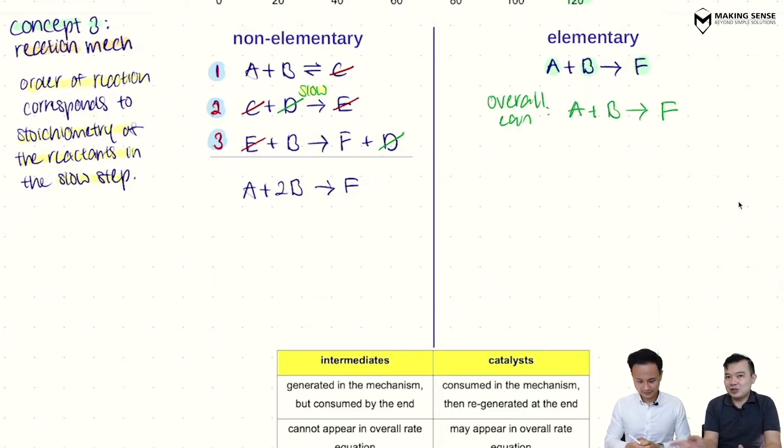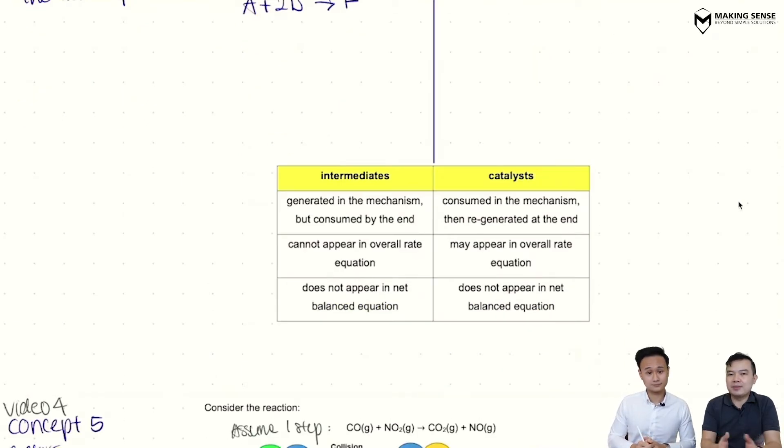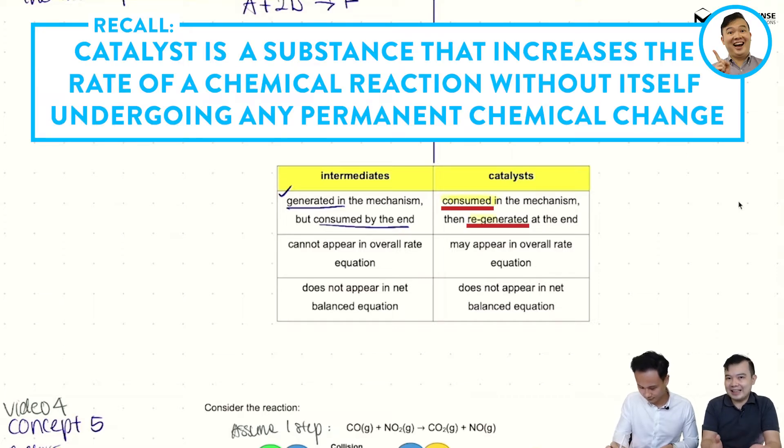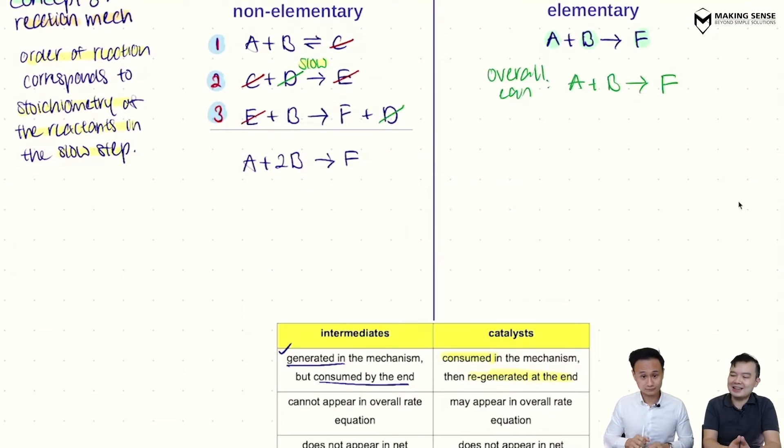So that's the second job. You need to recognize the things that you will cancel. Is it a catalyst or an intermediate? And how do we determine that? So with a table at the bottom, the easy way to take a look is, if I have an intermediate, it will generally be generated first before it is used up in a subsequent step. But for a catalyst, it is the other way around. It will be used up first before generated at the end of the reaction.